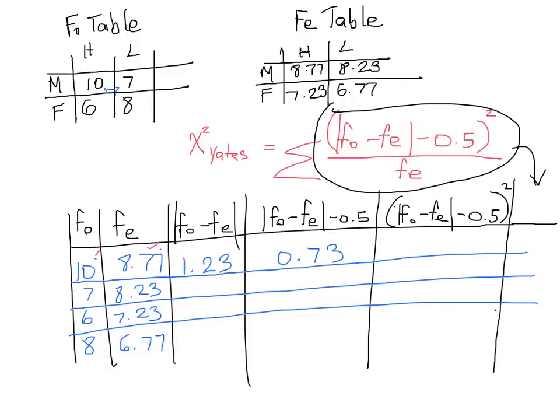You take 0.5 away from it in the next column and you get 0.73. You square that number as we should in the next column and we get 0.5329.